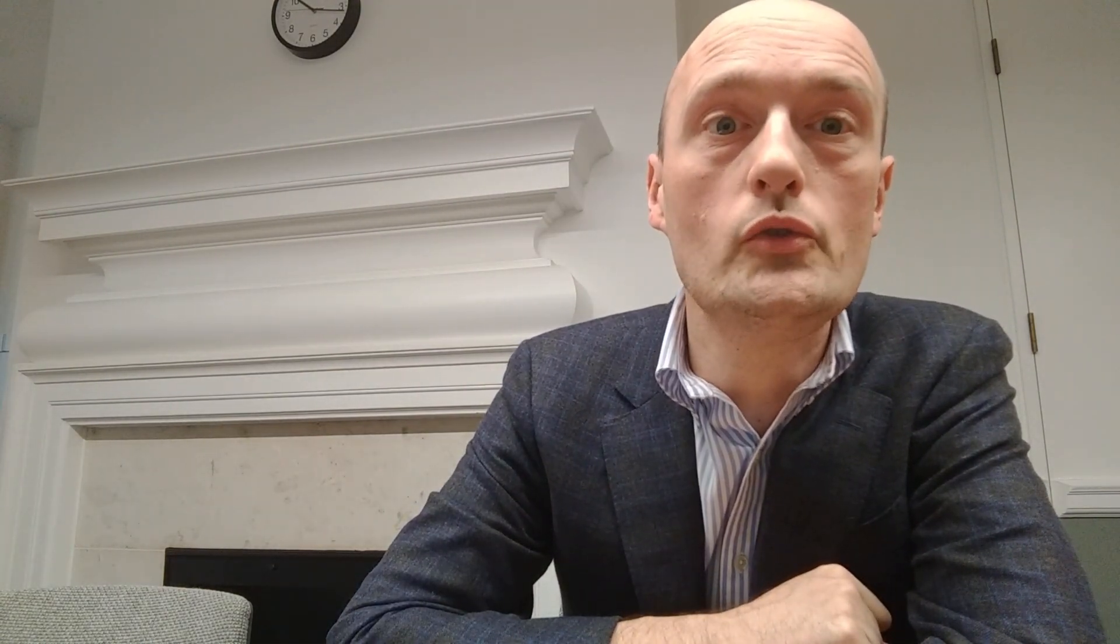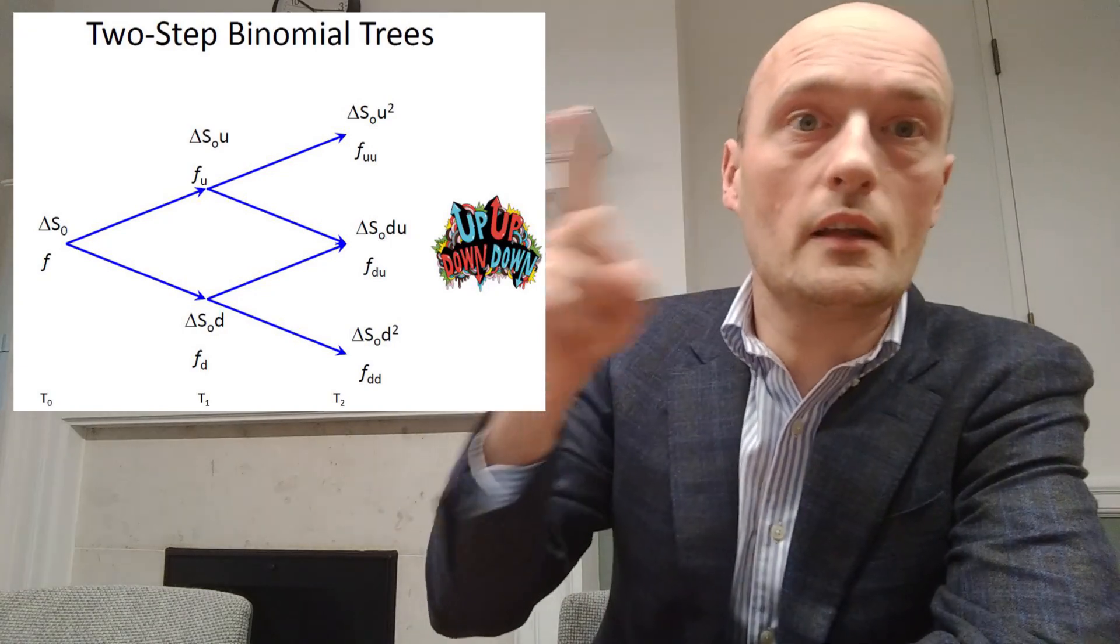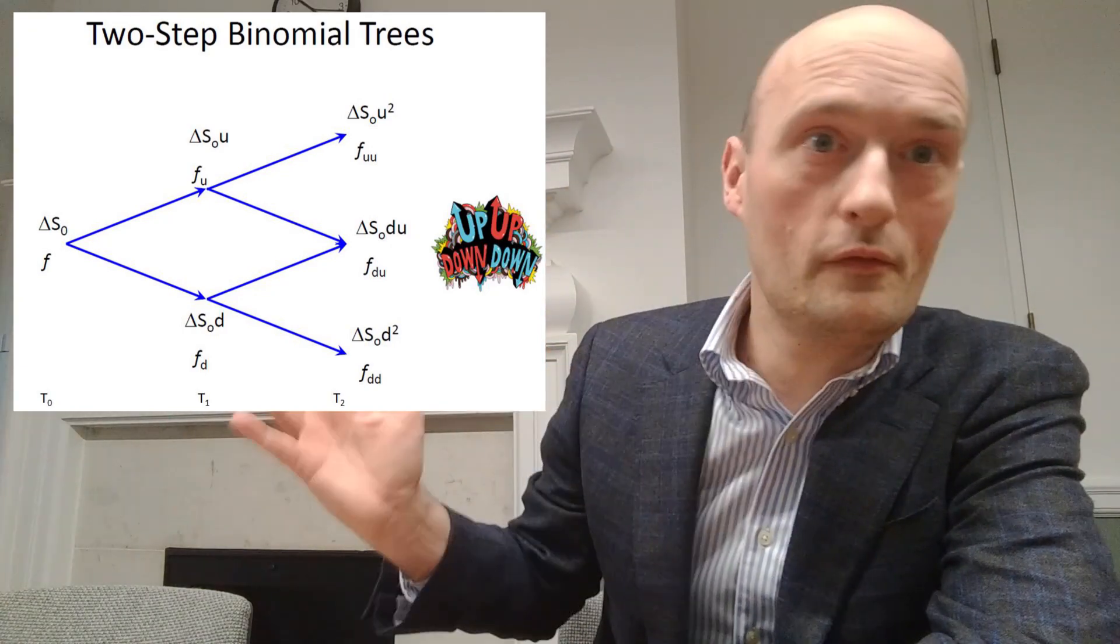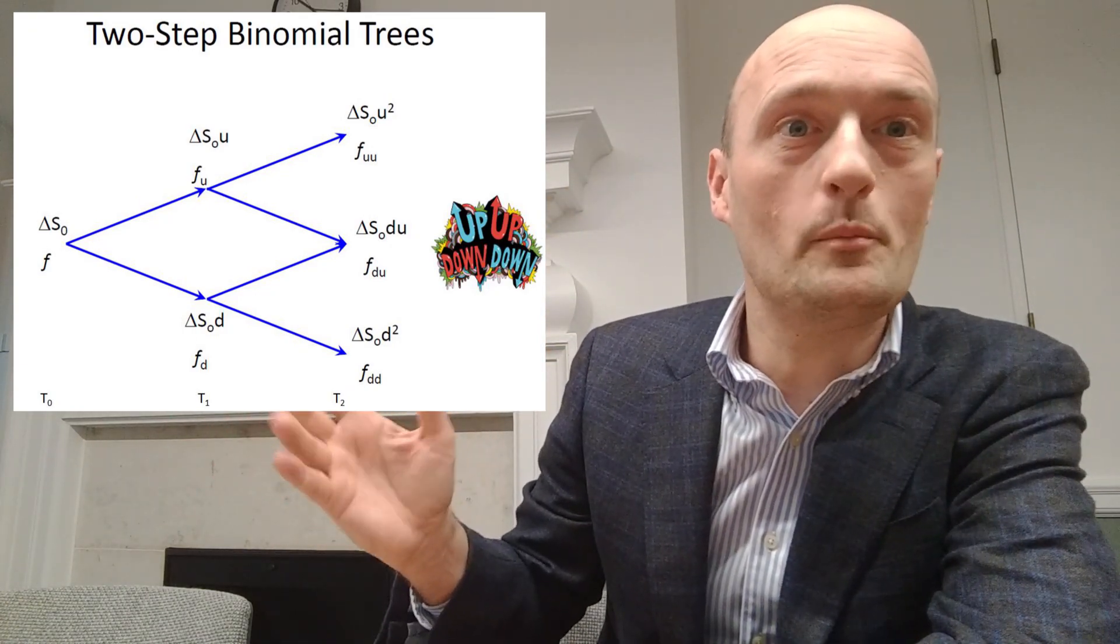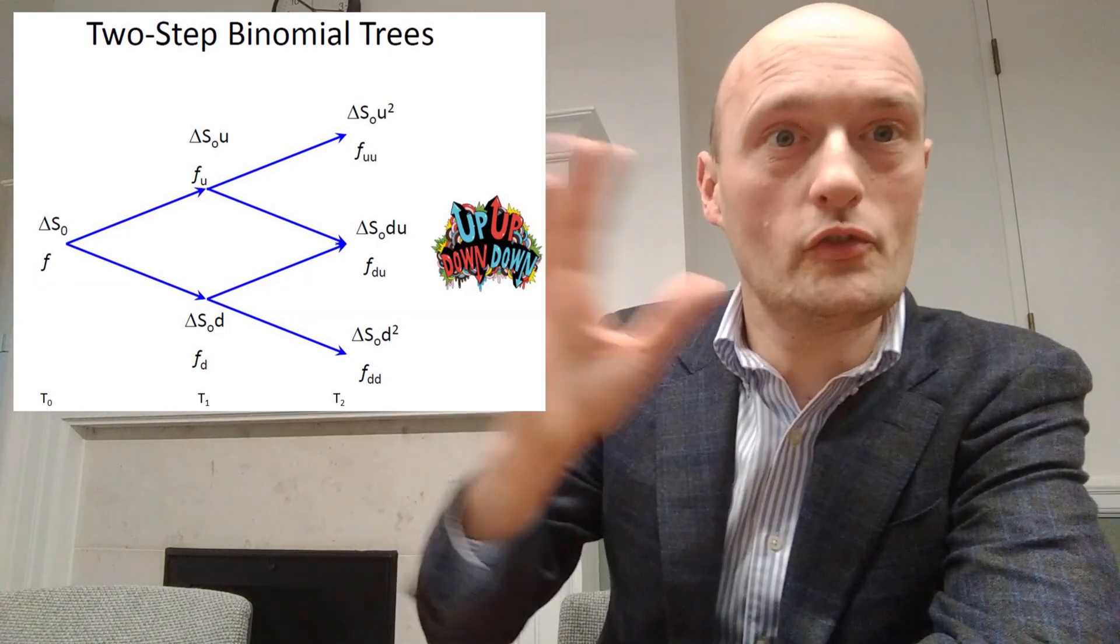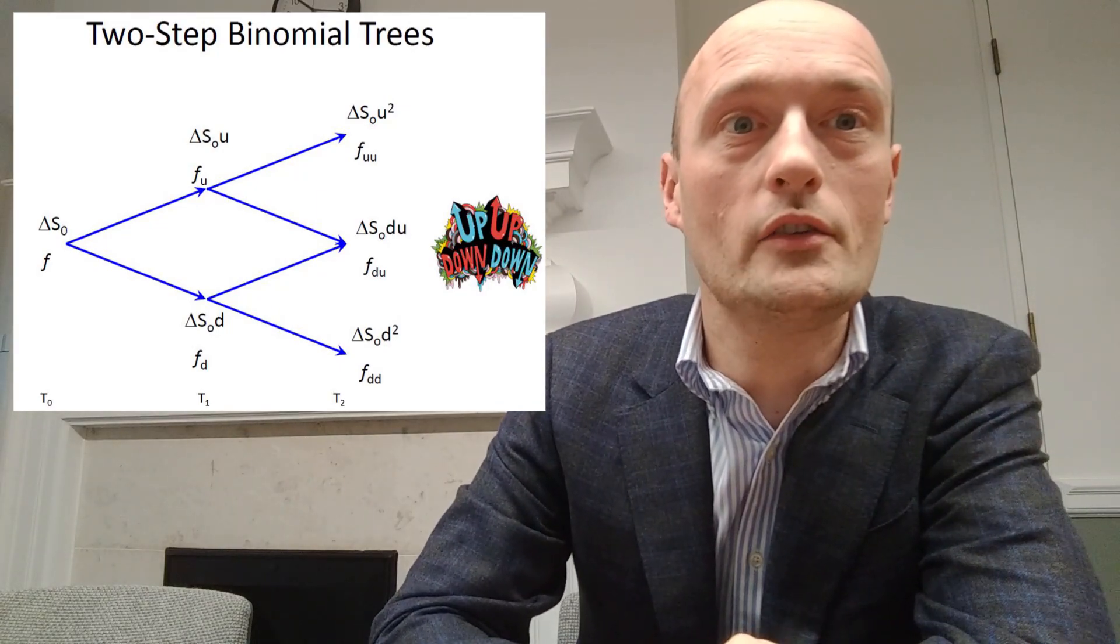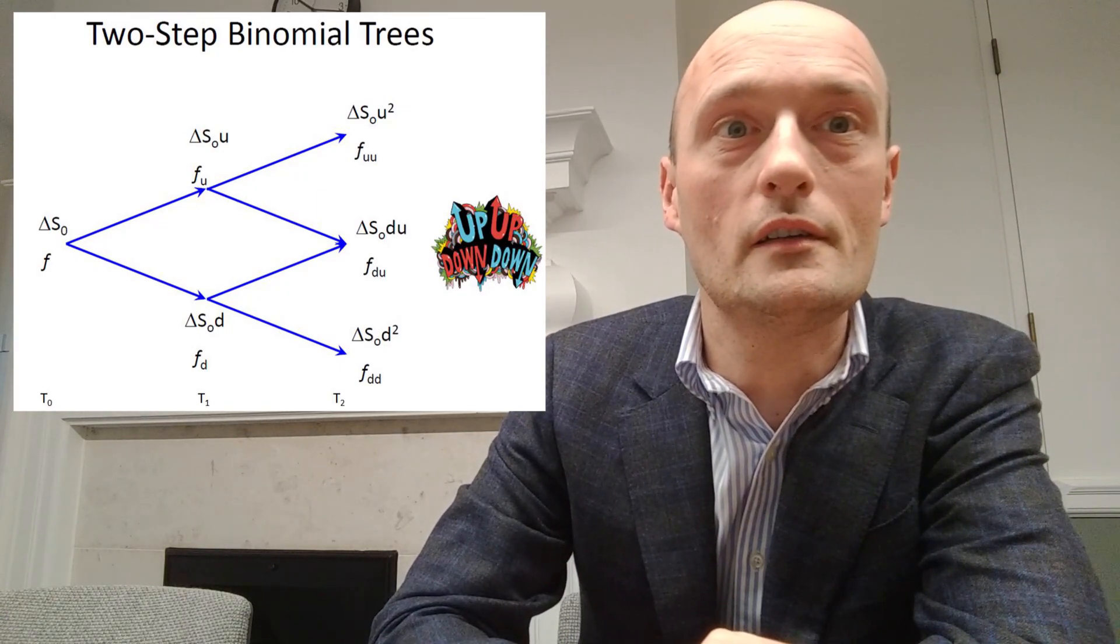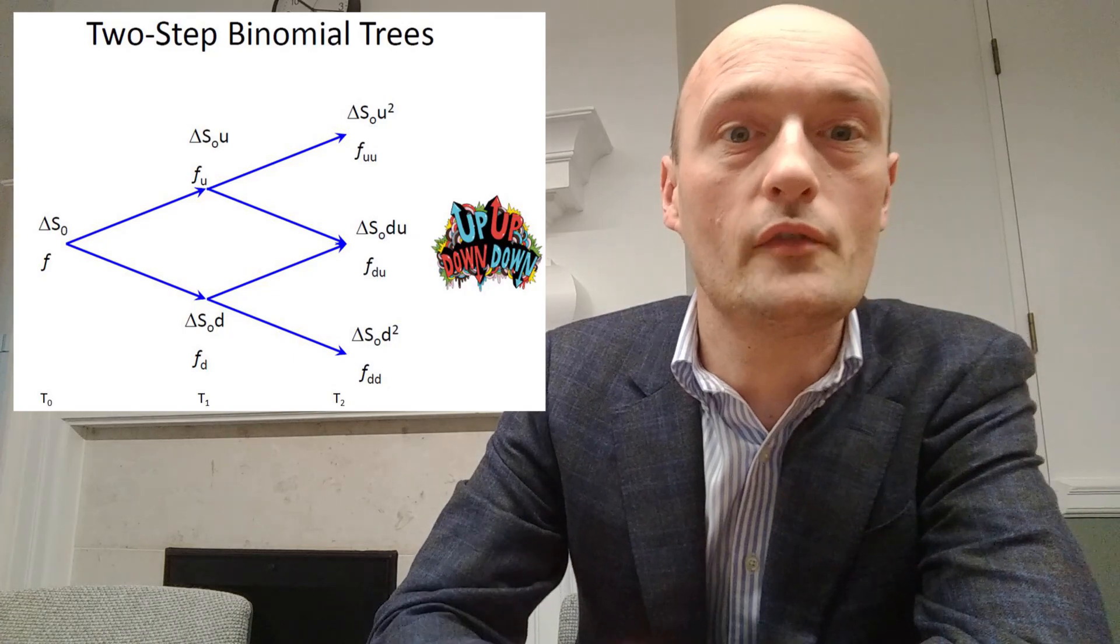So all you have to do is you do the same calculation for a two-step binomial tree but this time we're going to do it three times instead of once. And what you do is you calculate the value of the furthest over steps in the binomial tree. That gives you the u and d for the next binomial trees and you just keep calculating them back till you get to the start of the tree, and that is the price of our derivative.